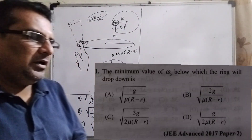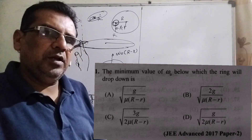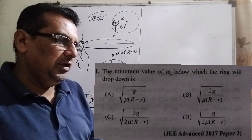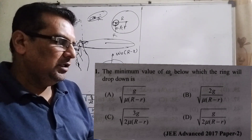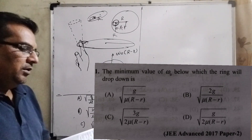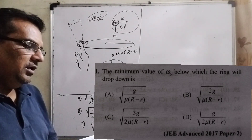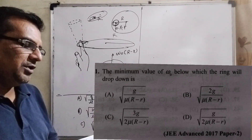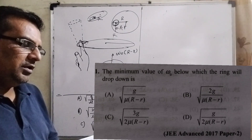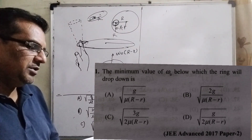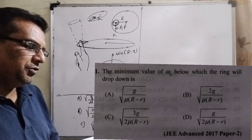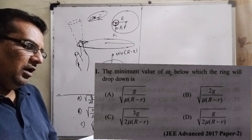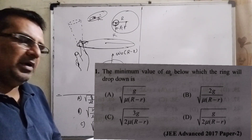Now the second part of the question asks: what is the minimum value of ω₀ below which the ring will drop down? The four options are: (A) √(g / μ(R−r)), (B) √(2g / μ(R−r)), (C) √(3g / 2μ(R−r)), and (D) √(g / 2μ(R−r)).